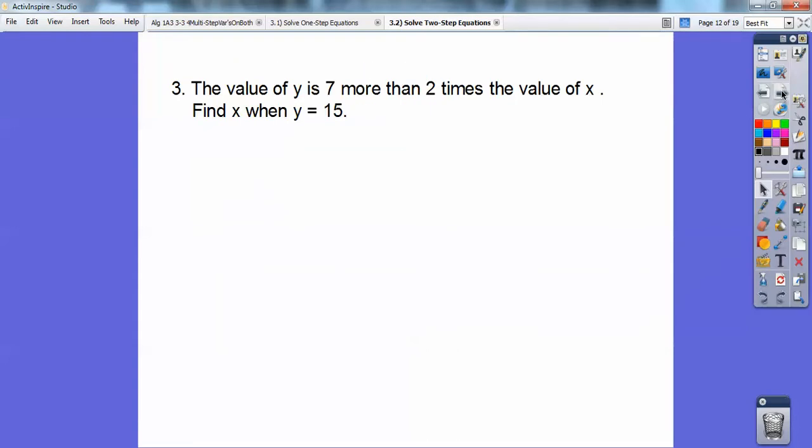All right, so the value of y is 7 more than 2 times the value of x. Find x when y is 15. Oh, golly. Let's set up an equation. Do you remember what 'is' means? It means equals, so I'm going to write y equals. You'll see I color-coded all of this. '7 more than' means something plus 7. It's 7 more than 2 times the value of x, so 2x plus 7.